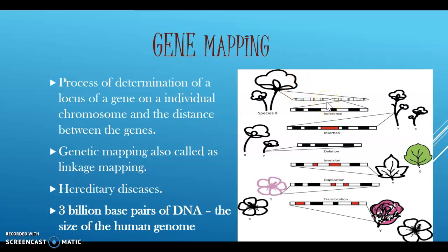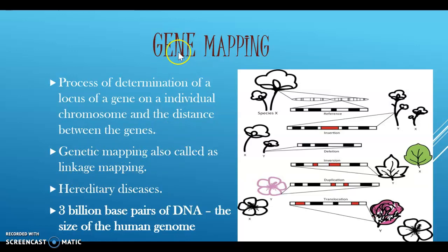The formation of an extensive human linkage map requires alleles that occur frequently at many different loci on every chromosome and the ability to readily identify the presence of suitable alleles. Genetic mapping is the process of determining the loci of a gene on individual chromosomes and the distance between genes. It helps in identifying the various genes responsible for hereditary diseases. Genetic mapping is also known as linkage mapping.